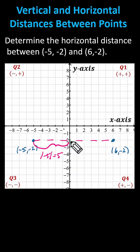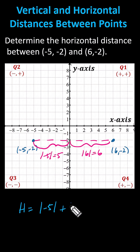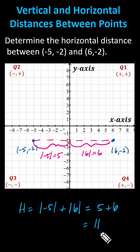The horizontal distance on the right equals the absolute value of x, which is the absolute value of six, which is six units. This indicates we can say the horizontal distance h between the two points equals the absolute value of negative five, plus the absolute value of positive six, which is five plus six, which equals 11 units. I hope you found this helpful.